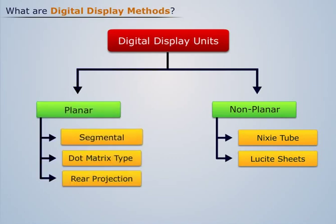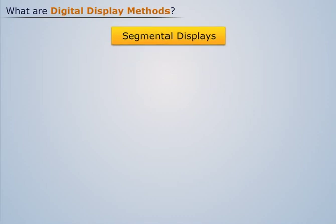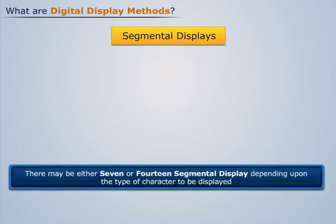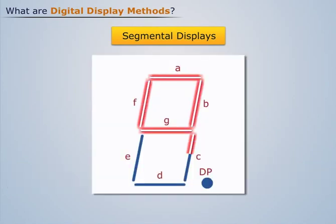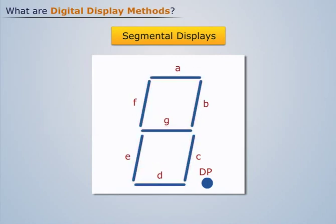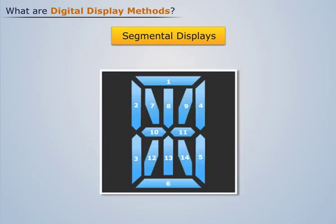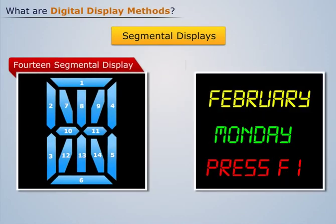In this section, we'll discuss the segmental type and dot matrix type displays. Segmental displays may be either 7 or 14 segments depending upon the type of character to be displayed. The 7-segmental display consists of 7 segments and is used for numeric display, while the 14-segmental display is used for display of alphanumeric characters.